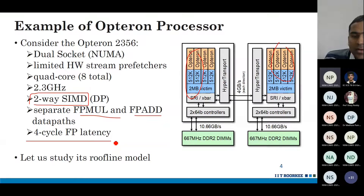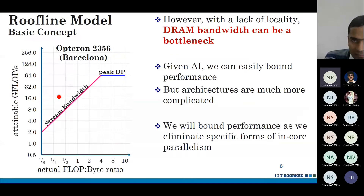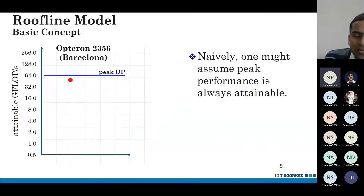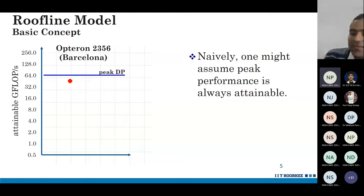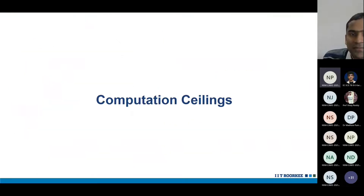Now let us study the roofline model. This is the roofline model — this could be our roofline if our DRAM bandwidth were infinity, but unfortunately that's not the case. Now let us bound this further by first discussing computation ceilings.